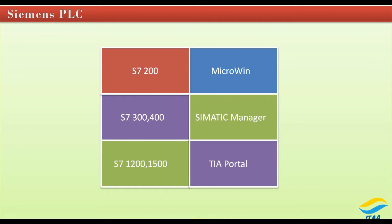As I told you, for programming a PLC we need to have software. The software used for S7-200 PLC programming is Micro-WIN. For S7-300 and S7-400 PLCs, that's Simatic Manager. Then there is TIA Portal, which is used for S7-1200 and S7-1500 PLC programming. Before TIA Portal, if we had to program an HMI, we would normally use WinCC Flexible or other different HMI programming softwares.